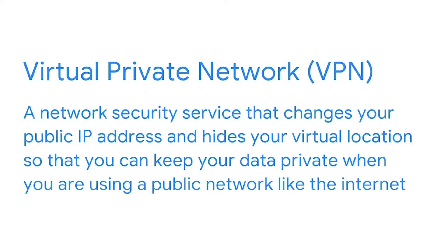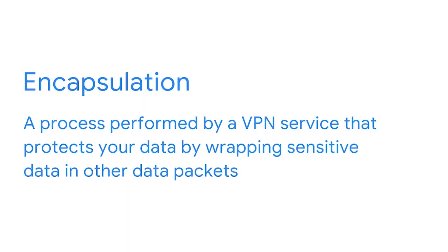A virtual private network, also known as a VPN, is a network security service that changes your public IP address and hides your virtual location so that you can keep your data private when you're using a public network like the Internet. VPNs also encrypt your data as it travels across the Internet to preserve confidentiality. A VPN service performs encapsulation on your data in transit. Encapsulation is a process performed by a VPN service that protects your data by wrapping sensitive data in other data packets.